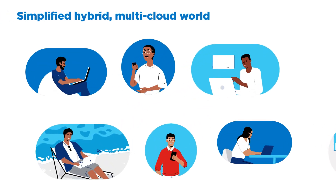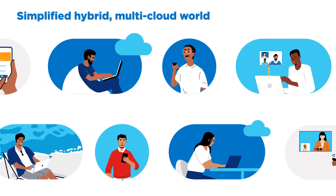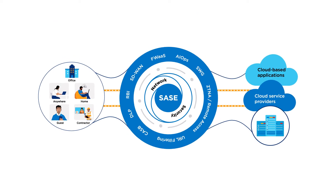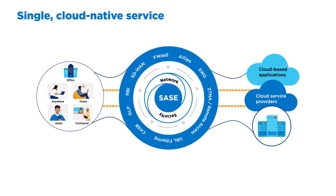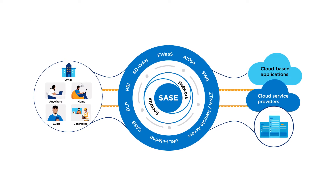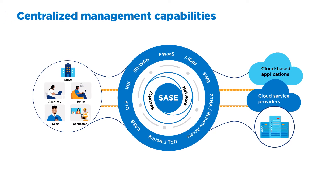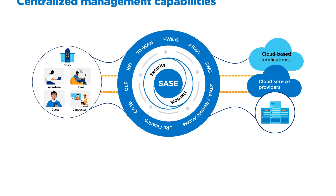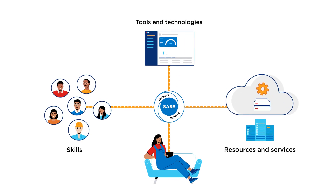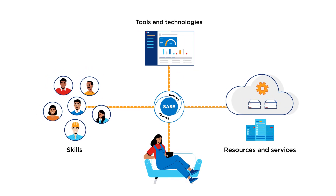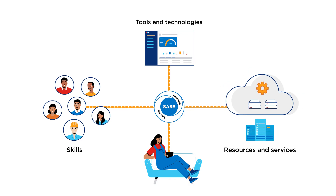It's complex to manage performance in a hybrid multi-cloud world. SASE combines multiple security functions into a single cloud-native service, enhancing control by centralizing management capabilities from a single provider, to free teams from configuring and maintaining stand-alone point solutions, so they can focus on business priorities.